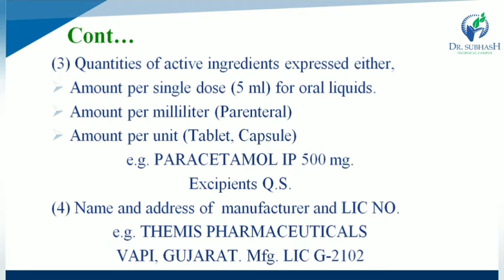Example: Paracetamol IP Tablet 500 mg, with excipients quantity sufficient. Next, the name and address of the manufacturer along with the license number must also be mentioned on the label. For example: TAMIS Pharmaceuticals, Vapi, Gujarat, with license number G2102.